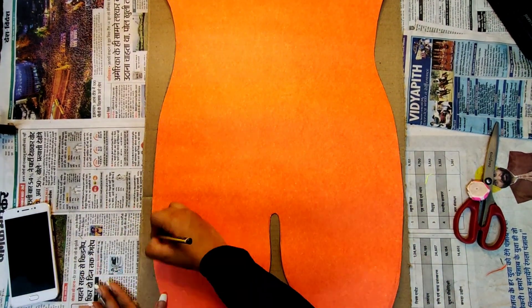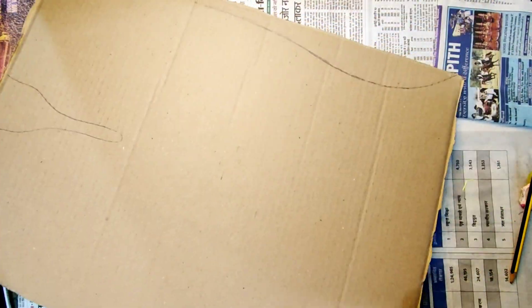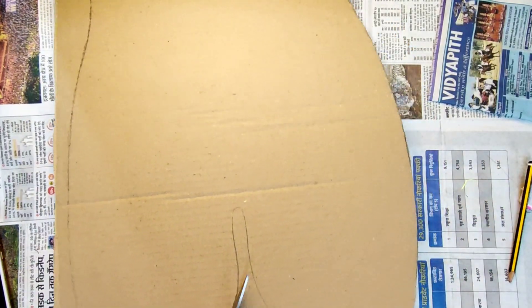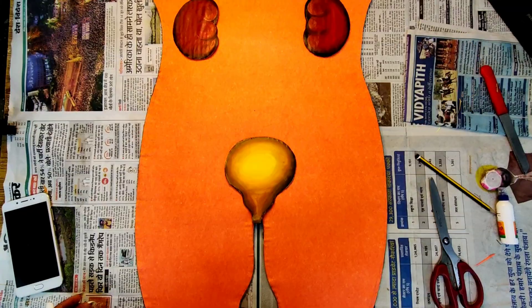First I'm taking the measurement of the sheet and then cutting the cardboard according to the sheet and then pasting it with the help of fevicol. After pasting the sheet, we'll take the measurement of the kidneys and the gallbladder.